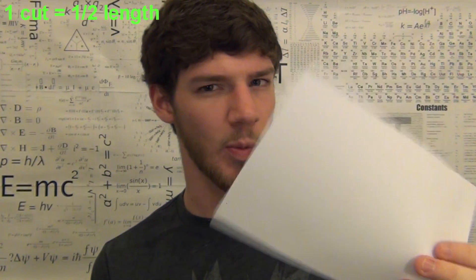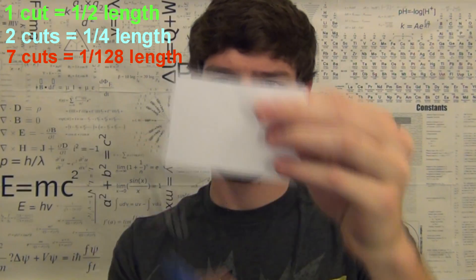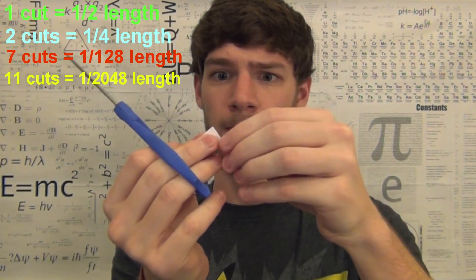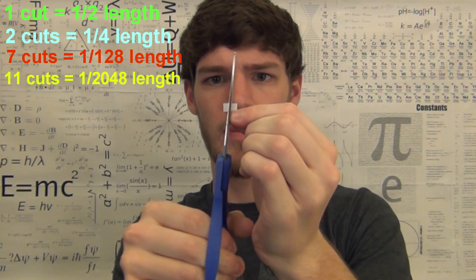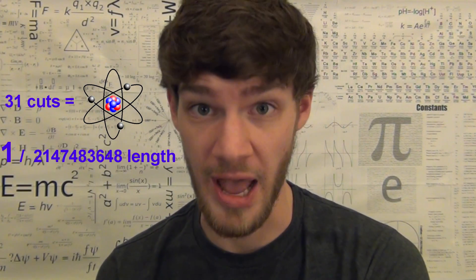But if we cut it in half again, what will we have? One fourth. After seven cuts, it's the length of an ant. At 11 cuts, it's as thin as it is thick, so about 0.1 millimeters. And at 31 cuts, it's the size of an atom.